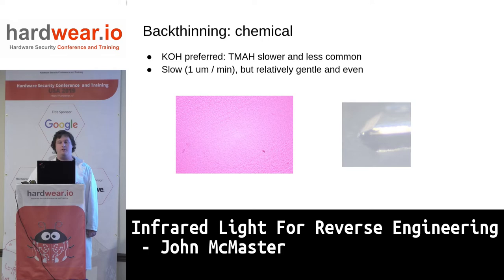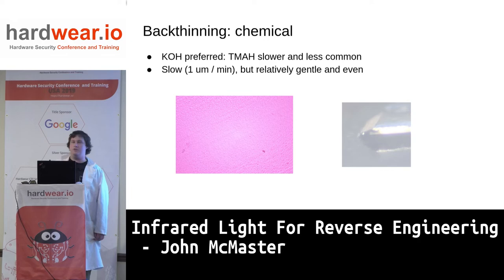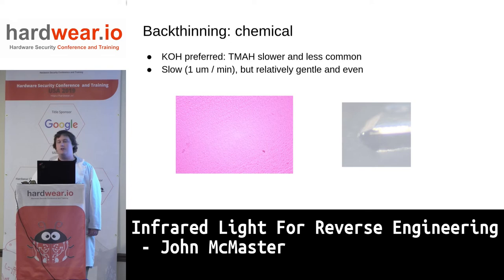I briefly tried chemical thinning. There are various solutions you can use - potassium hydroxide, TMAH. It seemed to work decently well. One thing to note is that in semiconductor facilities you're maybe thinning a couple of micrometers, but I'm thinning 300 micrometers, so the planarity I need is a lot higher than you might need in a fab. I think this has some potential, but since I've abandoned backside analysis, I'm not going to think about this too much right now. Also, you get slopes as you do this, which could cause issues depending on the type of analysis.